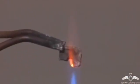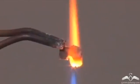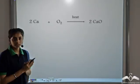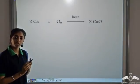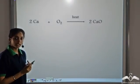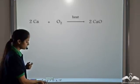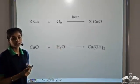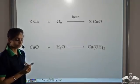Let's take a calcium piece. It burns with brick red flames. When calcium reacts with oxygen, it forms calcium oxide — that is the metallic oxide. When this metallic oxide reacts with water, it forms the corresponding hydroxide, that is calcium hydroxide.